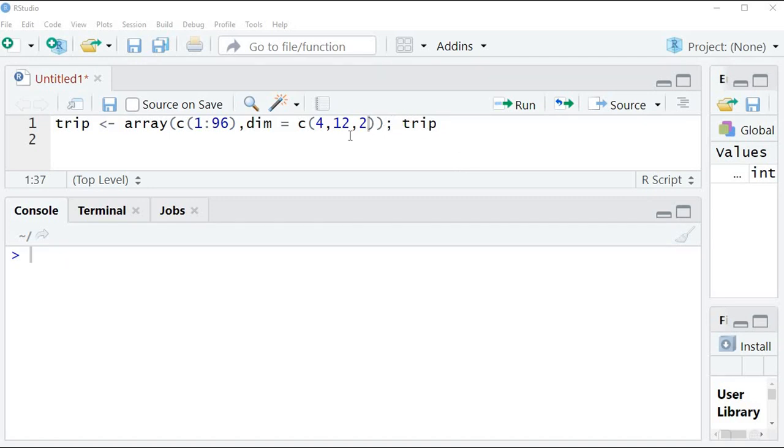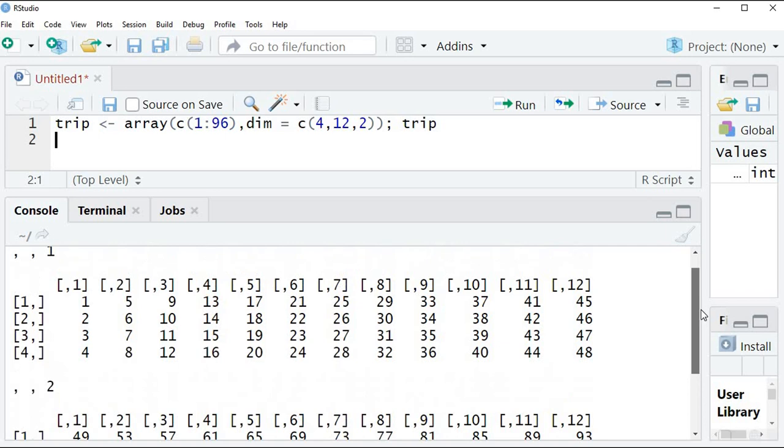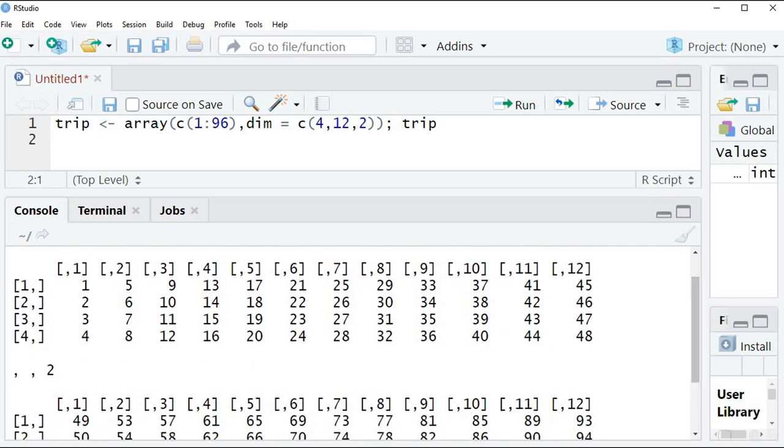So if you come to RStudio, we are going to create an array and assign it to trip. This array has 96 numbers, and these numbers are placed in two matrices. So let's do it. And as you can see here, our 96 students are distributed into two decks. This is the upper deck, and this is the lower deck.